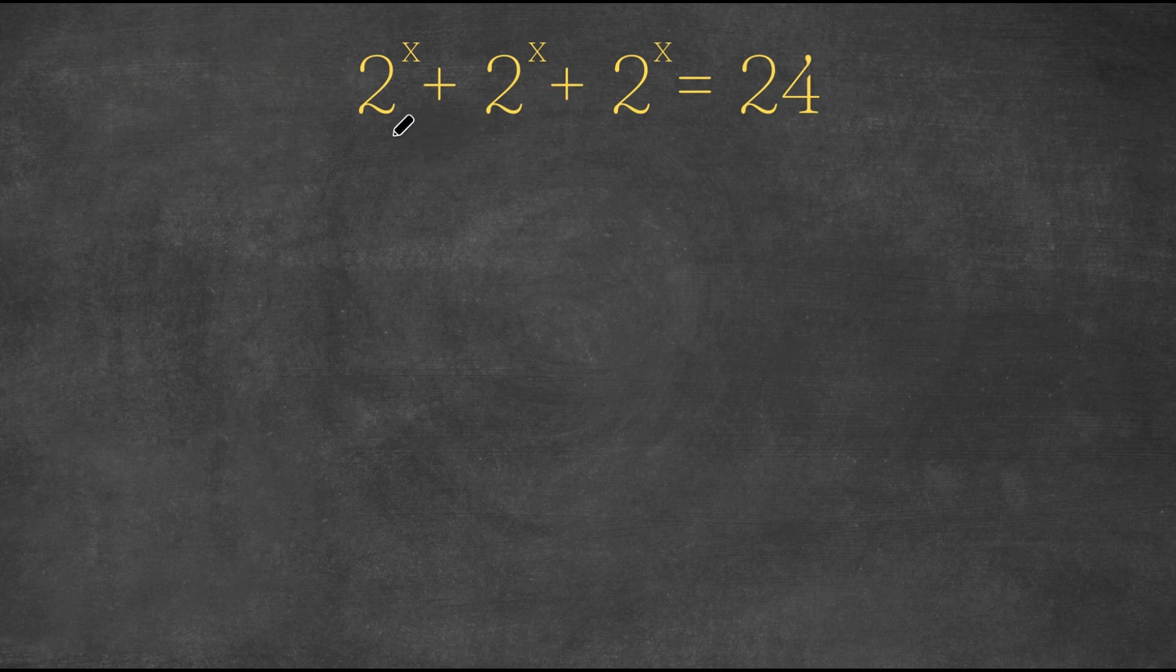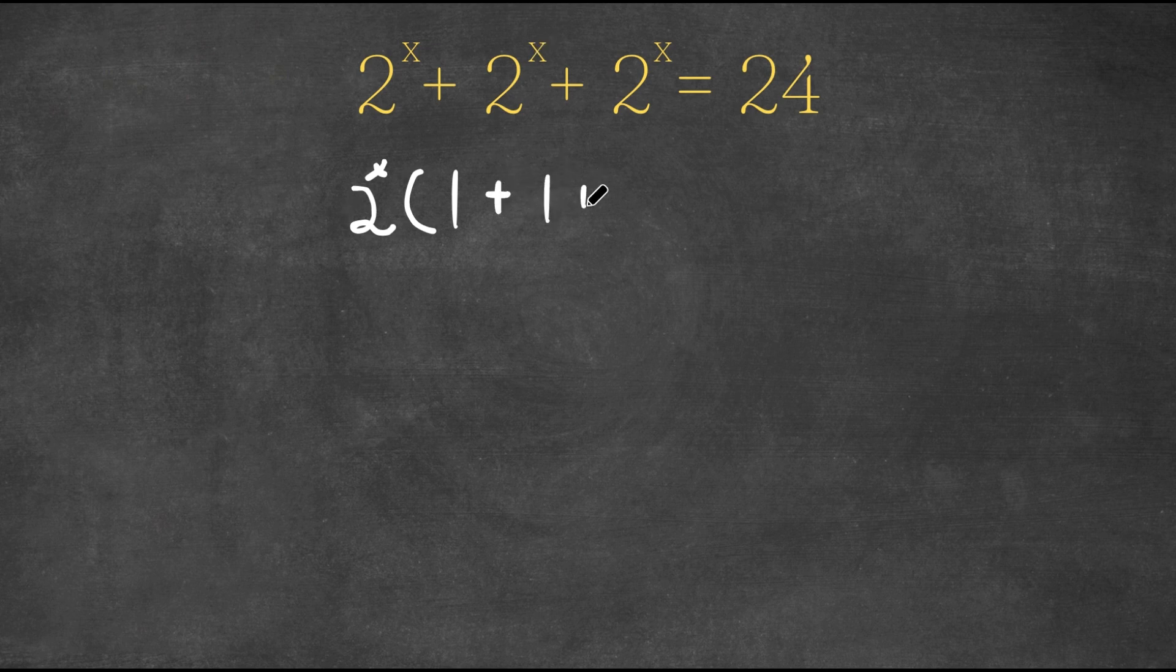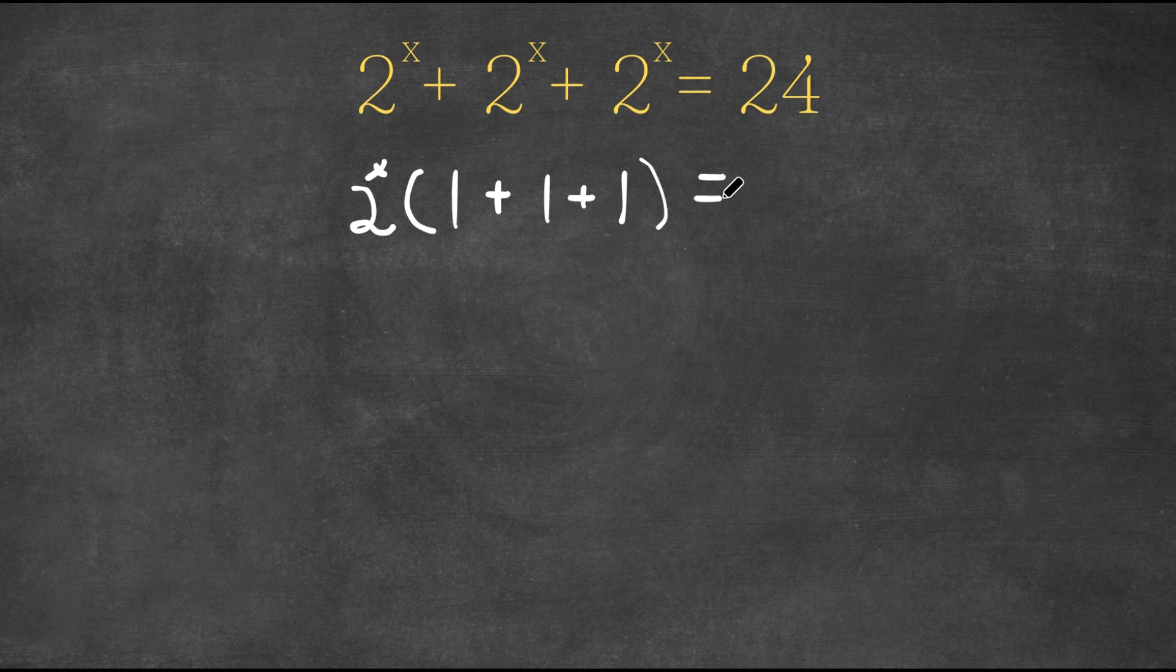What I'm first going to do is from the left hand side, because we have three terms that are the same, I'm actually going to factor out 2 to the power of x from this. So now we have 2 to the power of x times, 2 to the power of x divided by 2 to the power of x is 1, plus same thing 1, and plus same thing once again 1. And this equals 24.